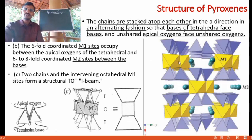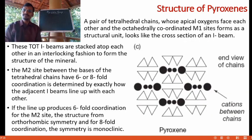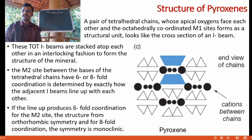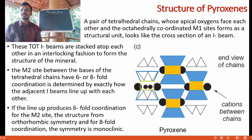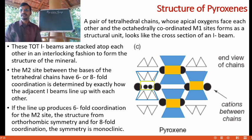The M1 octahedral sites occur between two apical oxygens whereas the M2 sites are occupied by six- or eight-fold coordinated cations between the bases of the tetrahedra. A pair of tetrahedral chains with apical oxygen facing each other and the octahedral M1 sites forms a structural unit that looks like the cross section of an I-beam. These T-O-T structures are stacked one over the other in an interlocking fashion. Based on the lineup of adjacent I-beams, M2 sites are occupied by octahedral to cubic coordinated cations. If the lineup produces six-fold coordination for M2, the structure has orthorhombic symmetry; for eight-fold coordination the symmetry is monoclinic.